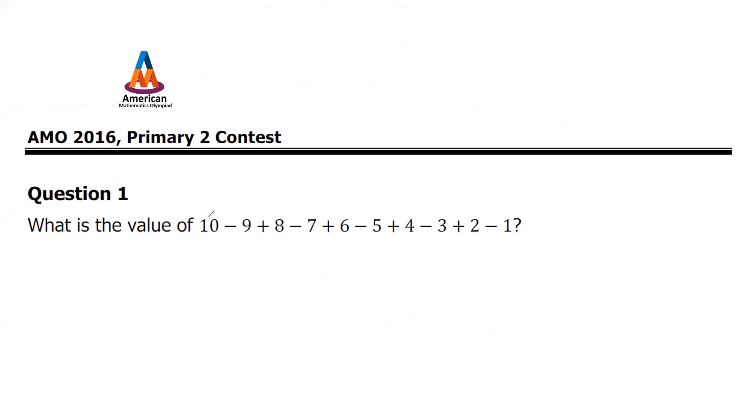I have discussed earlier that they focus more on the pairing method, and you see again the pairing method question in the first go. How many pairs? One, two, three, four, five, and each pair is equal to one, so one times five gives you five. Let's go to number two.